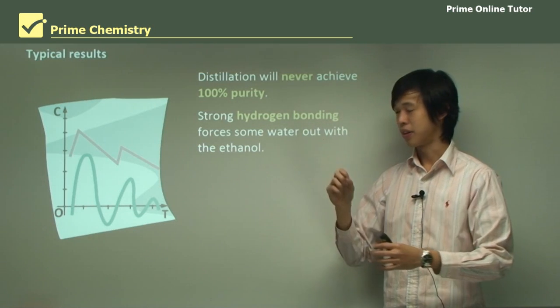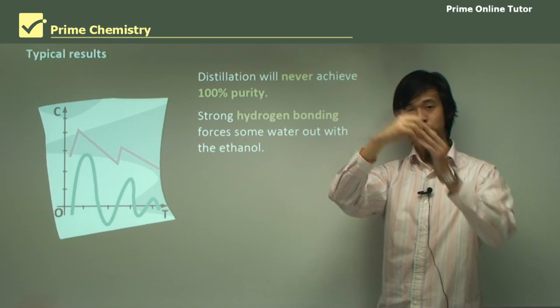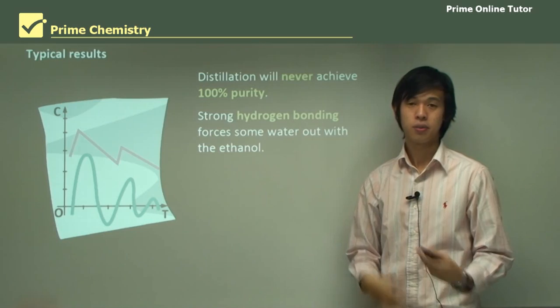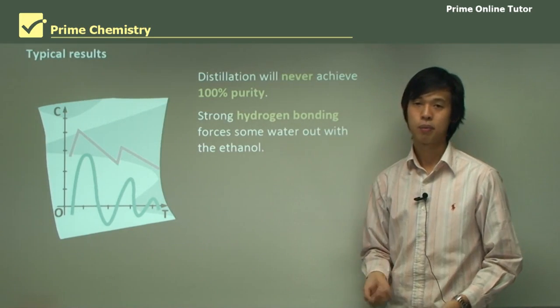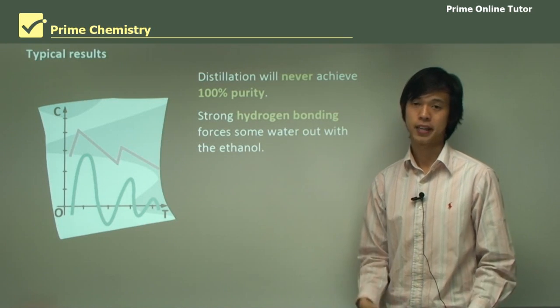But because there's such strong hydrogen bonding, because ethanol has an OH in it, it will drag water with it. So it always takes some water with it. So we can never quite get 100% purity, and that's the reason why. Because they're just so strongly soluble with each other, that it's just not possible.